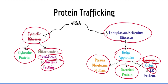Proteins which are destined for the lysosome, Golgi, endoplasmic reticulum, or plasma membrane, as well as those proteins which are meant to be secreted, are all made in the endoplasmic reticulum ribosome and are trafficked using vesicle-mediated transport. On the other hand, proteins destined for the mitochondria, peroxisome, nucleus, or cytosol are made in cytosolic or free-floating ribosomes. These proteins never use vesicle-mediated trafficking and instead use special amino acid sequences which target the protein to its destination.